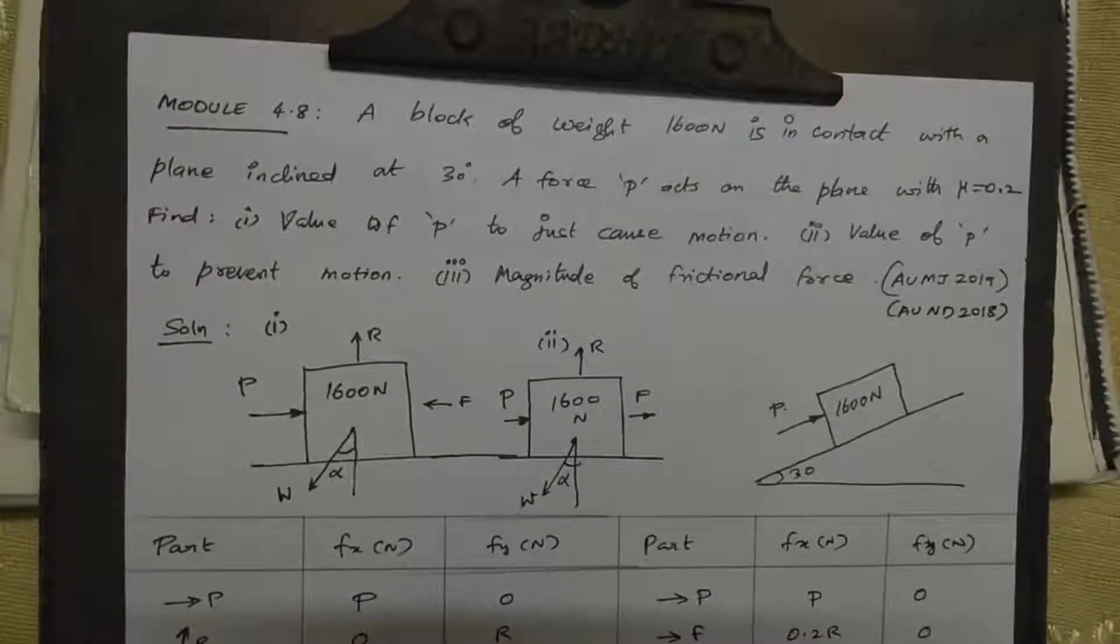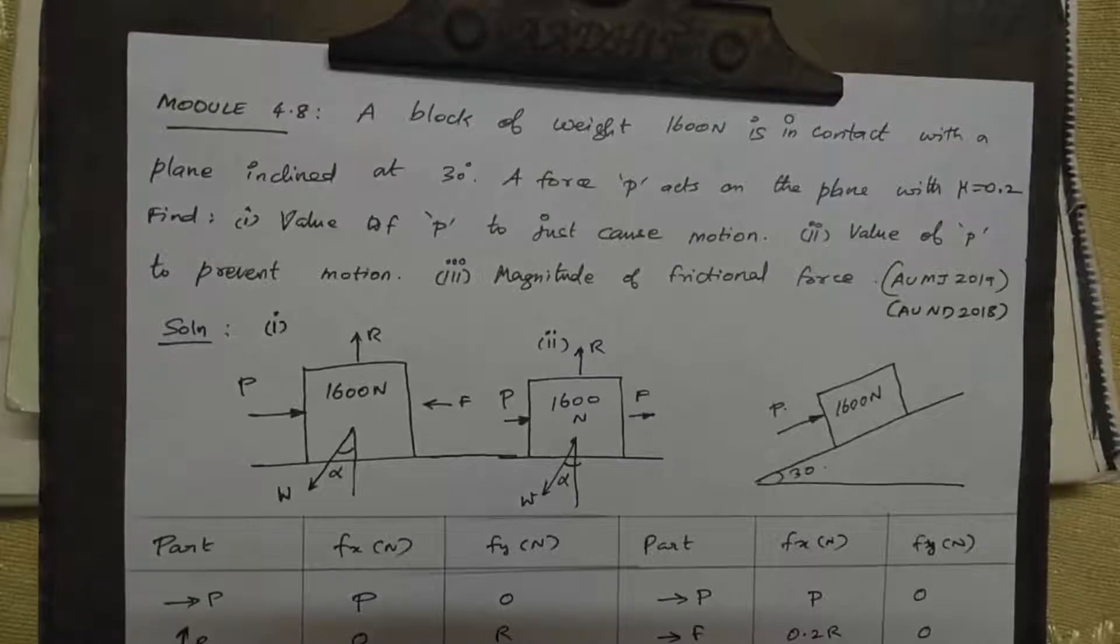Find number 1, value of capital P to just cause the motion. Second, the value of P to prevent the motion.